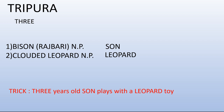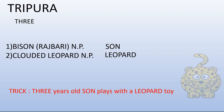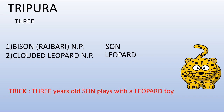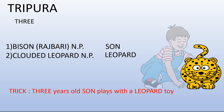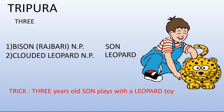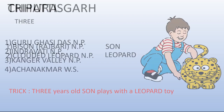Now let's see how we can remember this with an image. This is our Leopard, and this is a 3-year-old Sun who is playing with a Leopard Toy. So this represents our Tripura state.